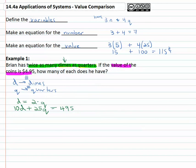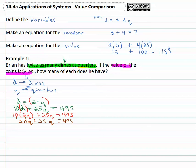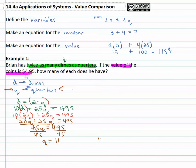We now have two equations with two variables, and we know how to solve these. Since D equals two Q, we can substitute — replacing D in the value equation. So instead of ten D, it's ten times two Q, giving us ten times two Q plus twenty-five Q equals four ninety-five. Multiplying gives twenty Q plus twenty-five Q equals four ninety-five. Combining like terms gives forty-five Q equals four ninety-five, and dividing both sides by forty-five gives Q equals eleven. Since Q is the number of quarters, there are eleven quarters.